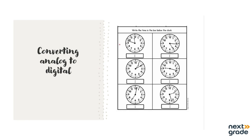In this video we are going to practice converting analog time to digital time. You can see in front of you an analog clock that you have to convert to digital time. Let's do it together. The hour hand is actually between 11 and 12, nearest to 12, and the minute hand is in between 9 and 10. Looking at the dots, we can count: 35, 40, 45, 46, 47, 48 — so the minute time is actually 48 minutes.